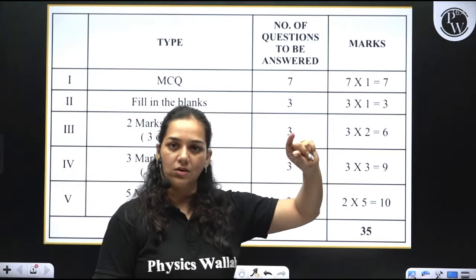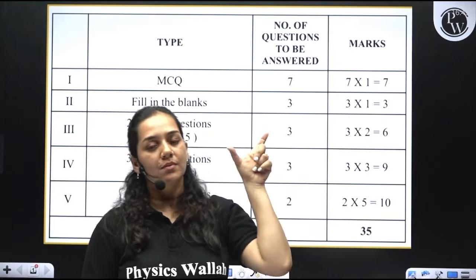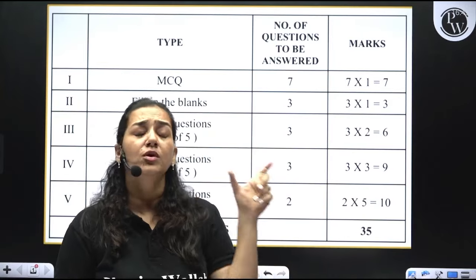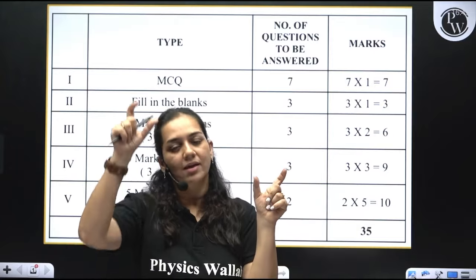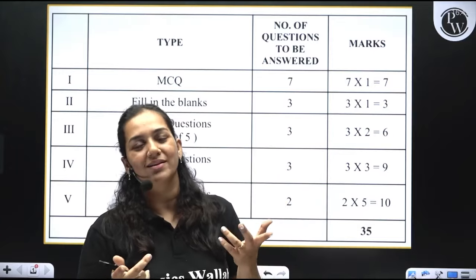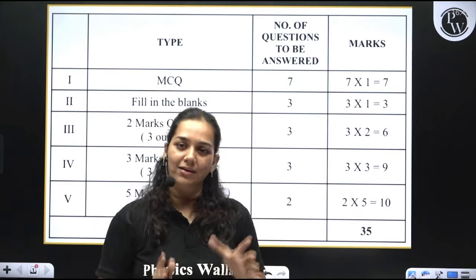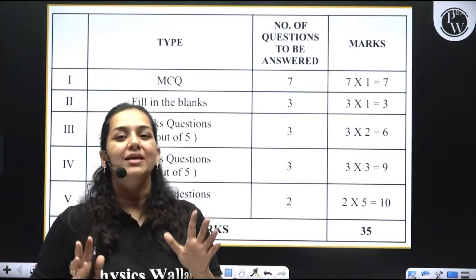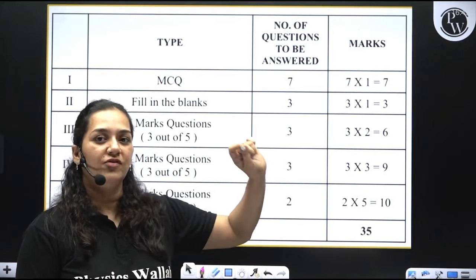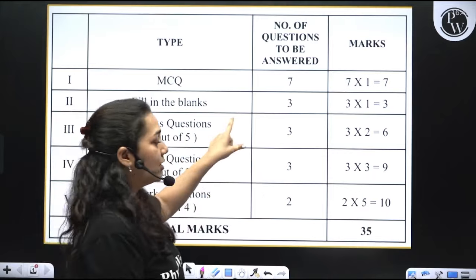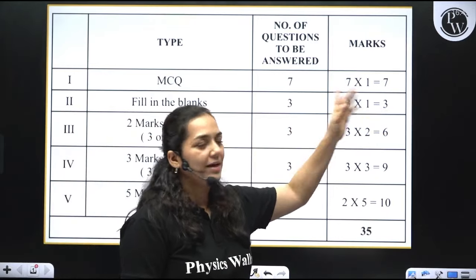Next is fill in the blanks. You will need book statements and fill in the blanks — basically words. You have to fill in the right answer. There is no choice for this. That is 3 marks, bringing the running total to 10 marks.